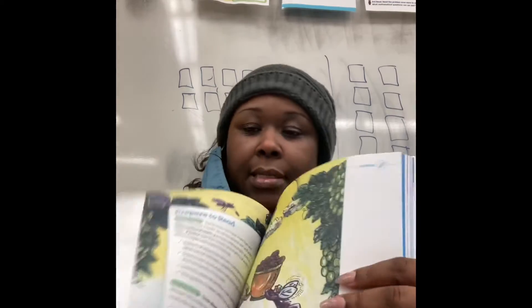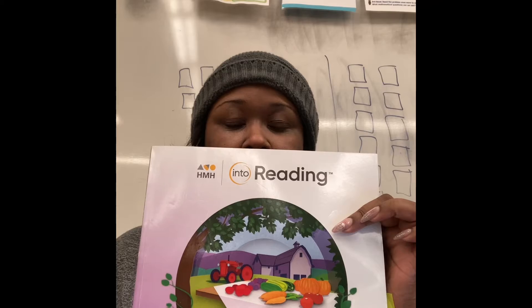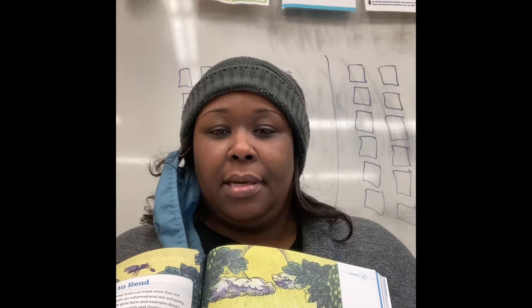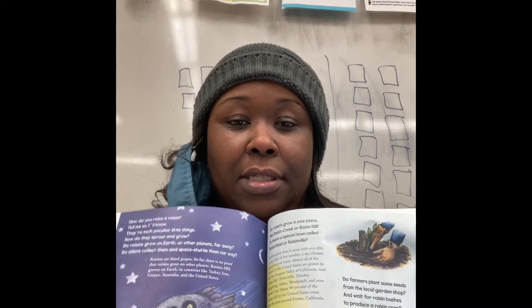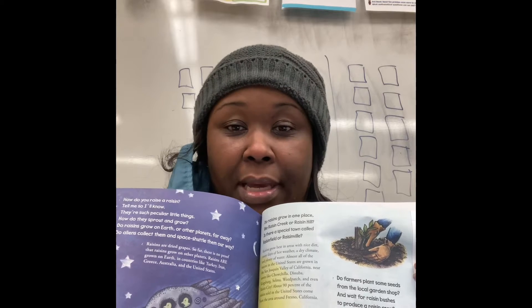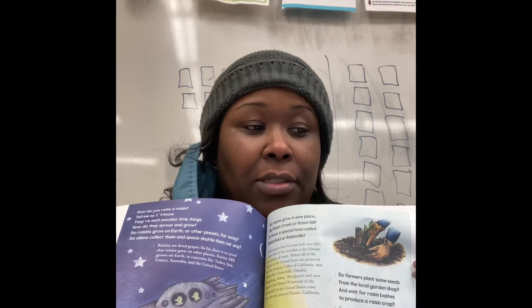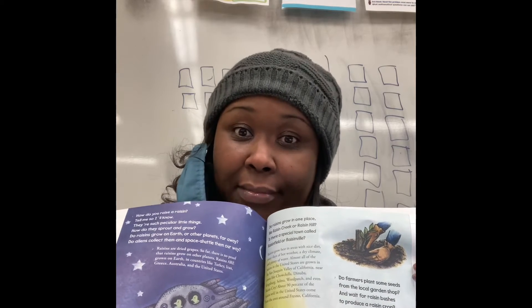I'm going to show you really quickly the text — it's an informational text called 'How Do You Raise a Raisin.' This is the text we use from HMH, and it's in 'My Book' number two, page 310. This is the lesson we're going to start on. This is the beginning of our cycle two — quarter two, cycle two, day two. She gave me a lot of good ideas for making sure students are engaged and demonstrating critical thinking skills to deepen their understanding.